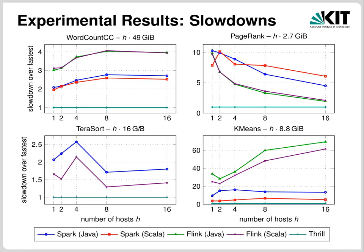What is plotted here are slowdown results, with slowdown relative to the fastest framework on the y-axis. Thrill is always the fastest framework, so these slowdowns are actually relative to Thrill. For word count, Spark is about a factor 2.5 slower on 16 machines (512 cores), and Flink is about a factor 4 slower. For PageRank, Thrill starts out strong but the speedup drops with more machines as the network becomes the bottleneck — with 16 machines, Thrill is about twice as fast as Flink and a factor 4.5 faster than Spark.